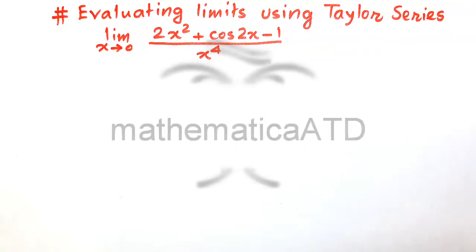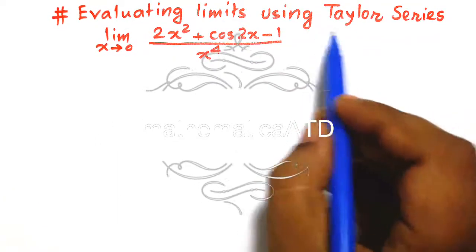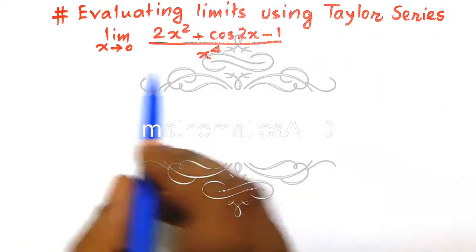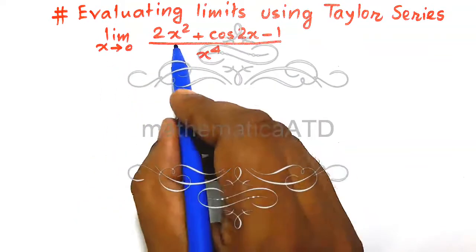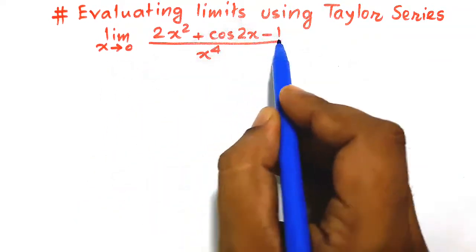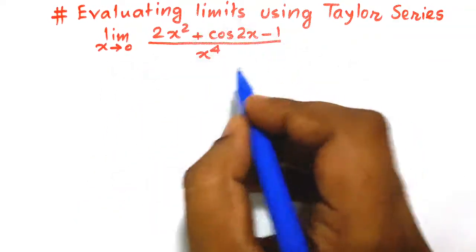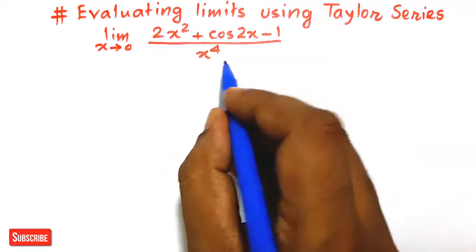Friends, welcome back. Evaluating limits using Taylor series. The problem is: limit as x tends to 0 of 2x² + cos(2x) − 1, divided by x⁴.